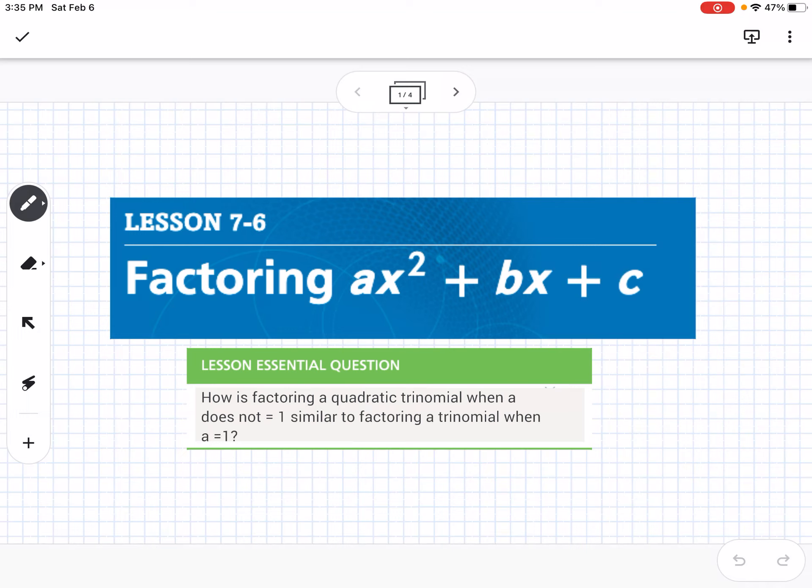This is lesson 7-6, which is factoring ax squared plus bx plus c. Our essential question is, how is factoring a quadratic trinomial when a does not equal 1 similar to factoring a trinomial when a does equal 1?